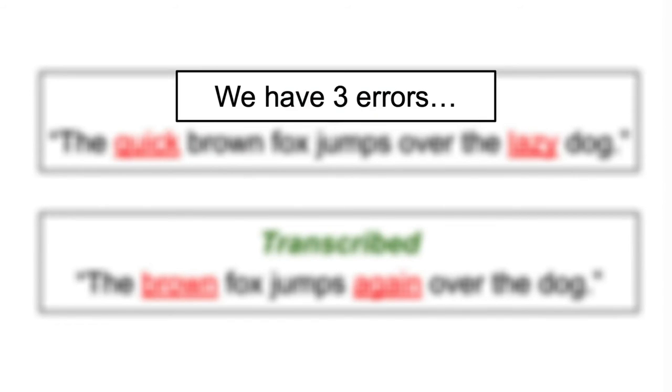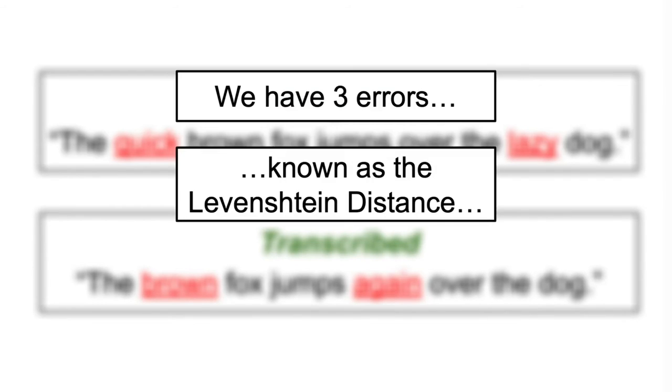This error is known in the literature as the Levenshtein distance, which is a measure of the similarity between two strings and is usually calculated using a dynamic programming approach.